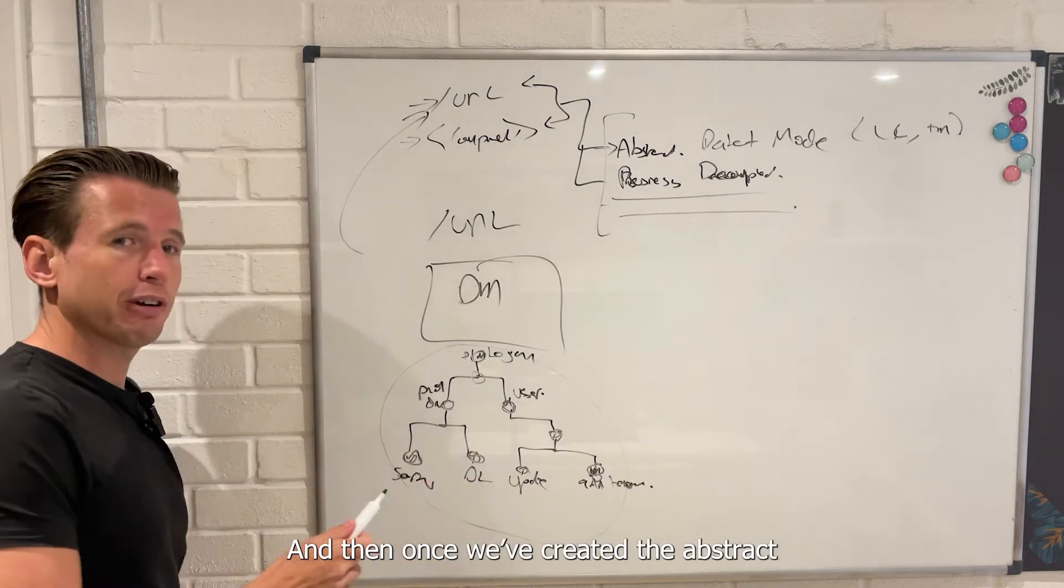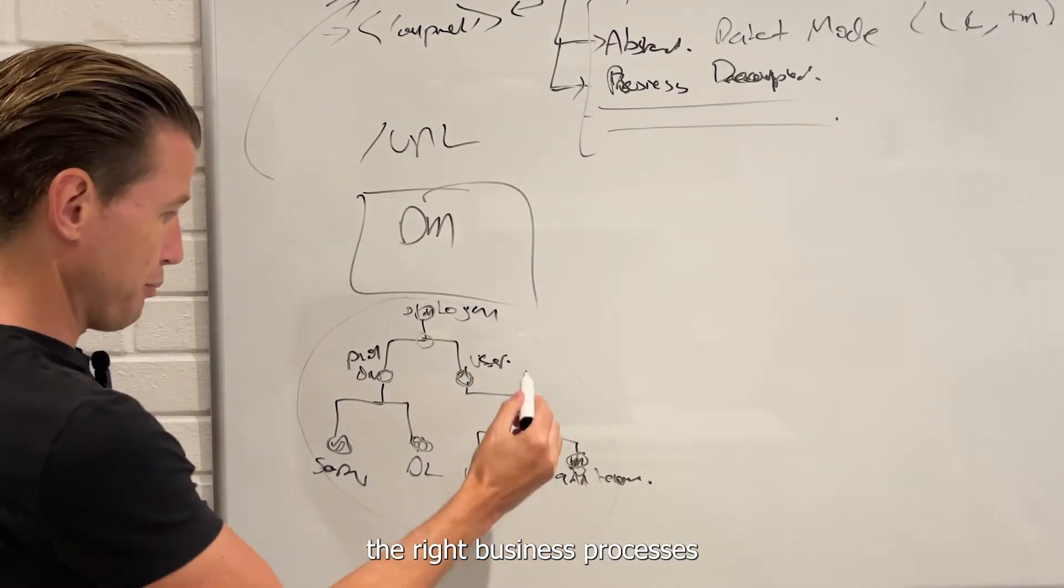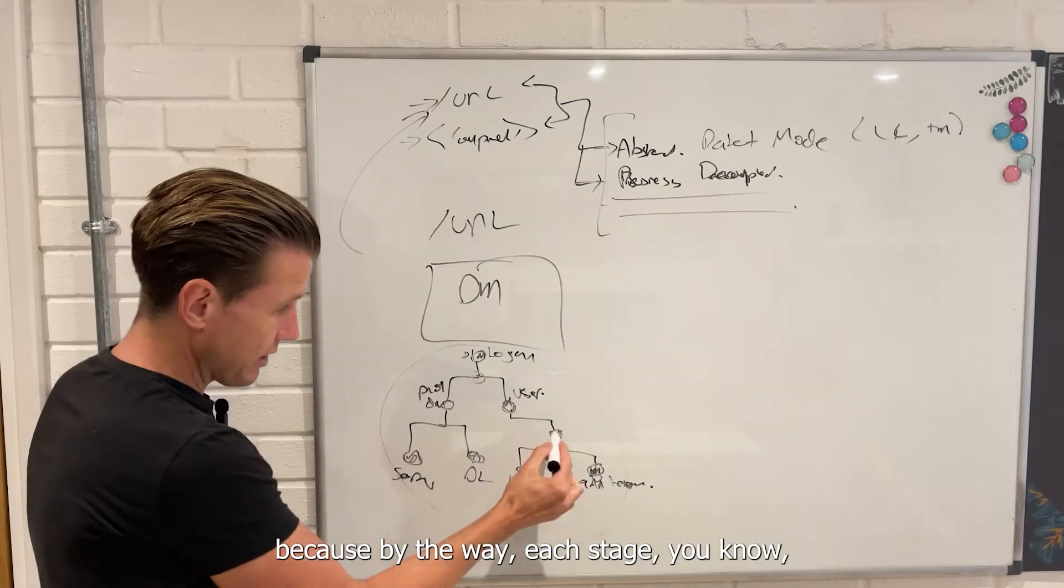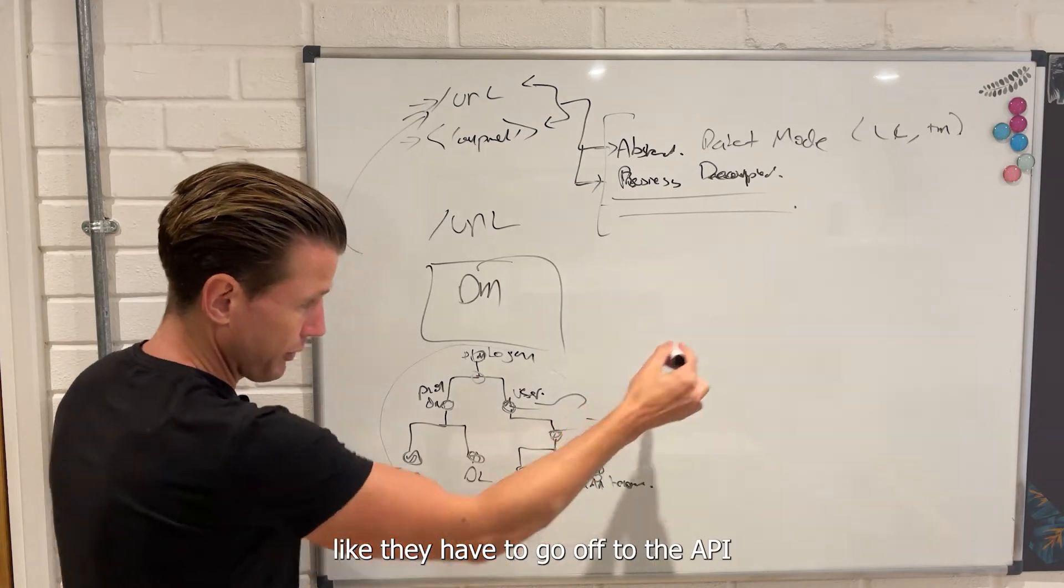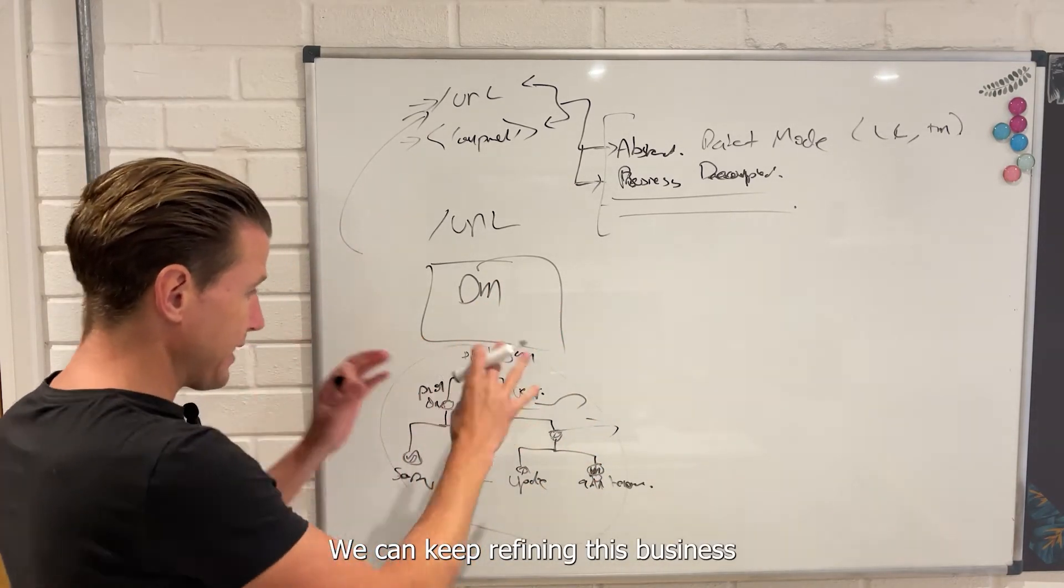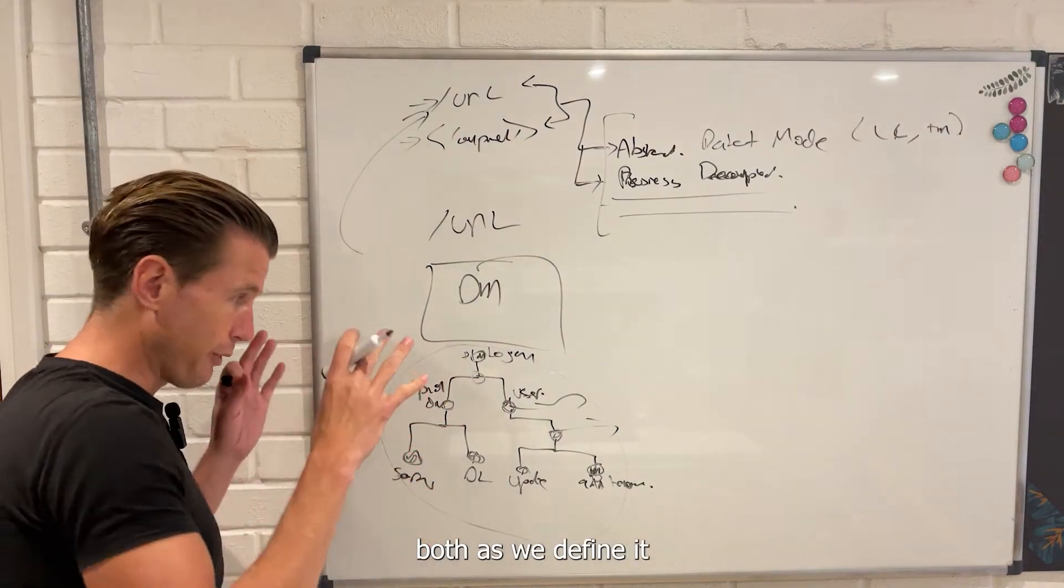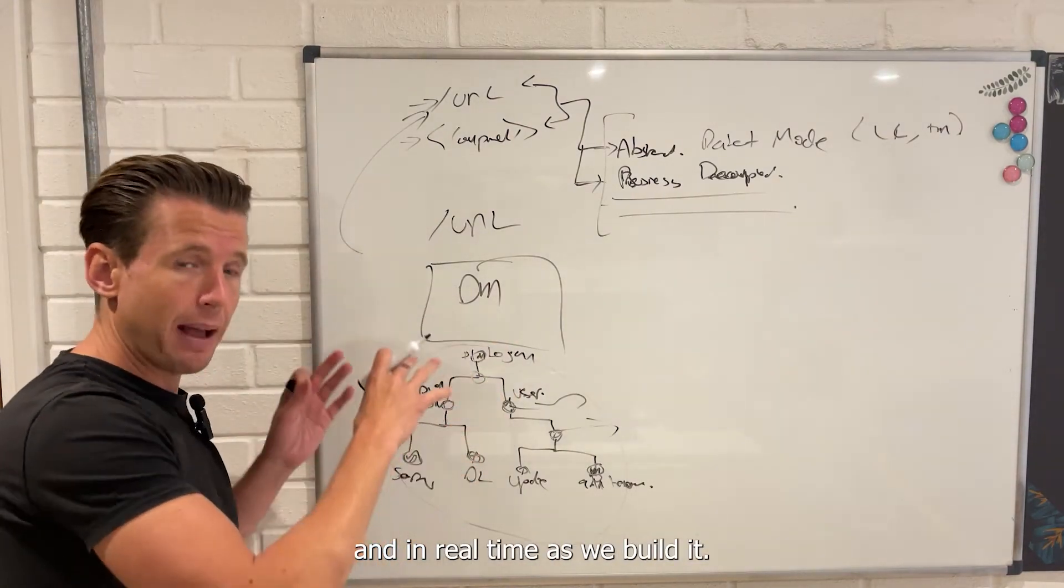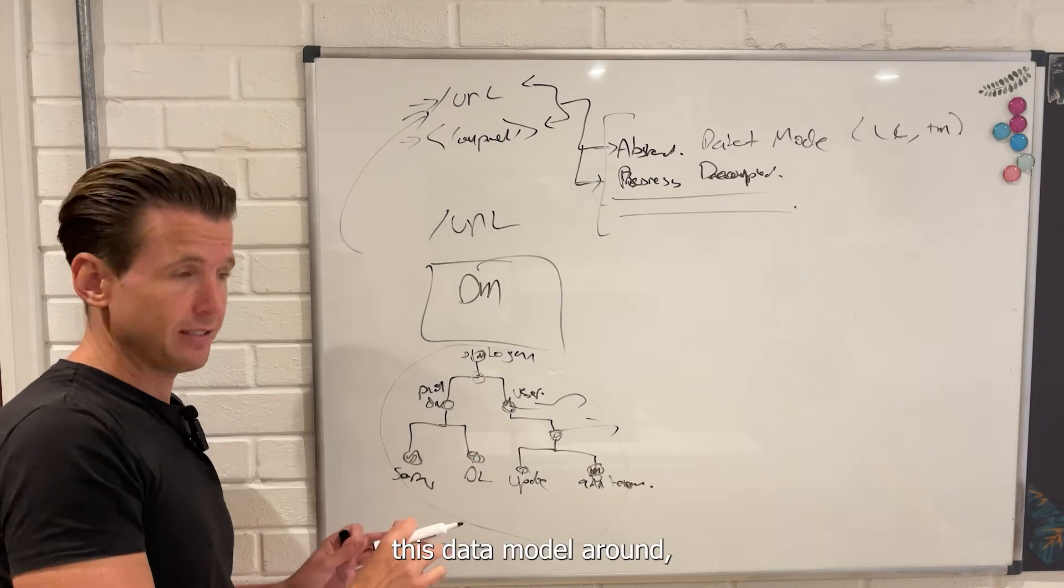Once we've created the abstract data model and we've run the right business processes at each stage, because by the way, at each stage there may be things like they have to go off to the API and load other data, we can keep refining this business model, both as we define it and in real time as we build it. We can dynamically shift this data model around.